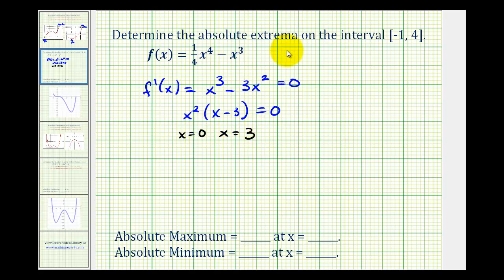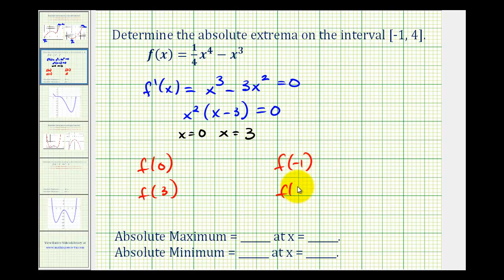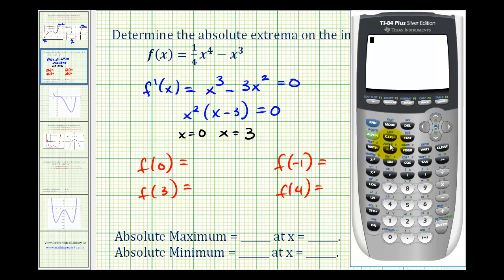Now to determine the absolute extrema, we need to evaluate the function at these critical numbers, but also at the endpoints of negative one and four. The largest function value of these four will be the absolute maximum, and the least function value will be the absolute minimum. To save some time, we're going to evaluate the function using the calculator — the function is already typed into y one.